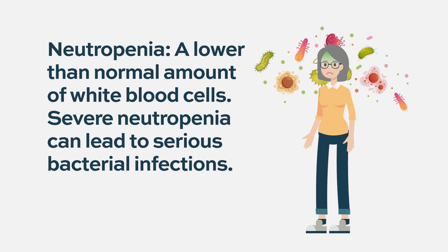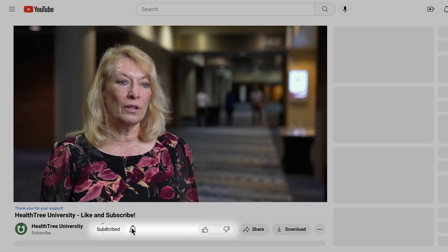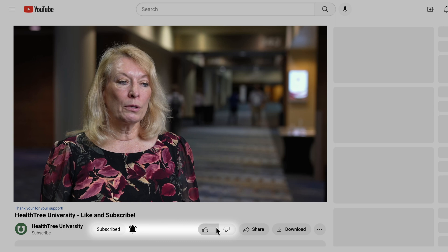We look at neutrophils to determine if you're neutropenic. Severe neutropenia is really a problem as far as your risk of a bacterial infection, which can take people's lives when you have AML. So it's really important to monitor that absolute neutrophil count. It's the percentage of your total white blood cell, but a lot of times they'll give you an absolute neutrophil count.